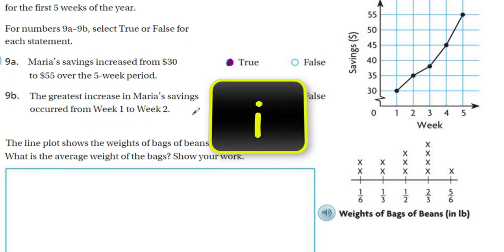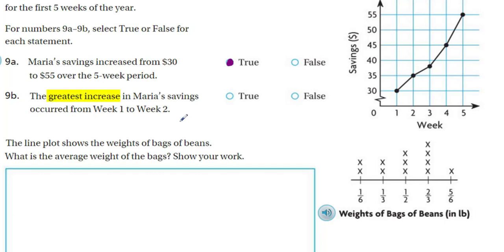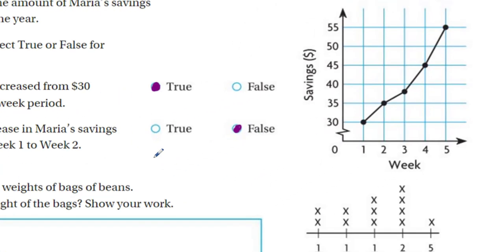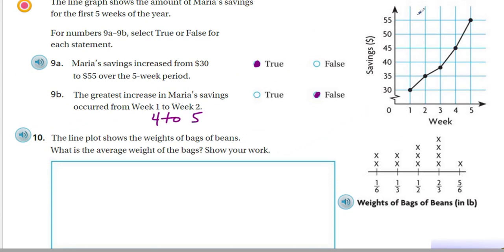The greatest increase in Maria's savings occurred from week one to week two. Let's see if that's true. From week one to week two we see a five-dollar increase — she was at 30, by week two she was up to 35. Looking at my graph, I can see there's a steeper incline as we go up. From 35 it didn't even get to 40, so that's less than $5. Then there's a bigger jump — and from week four to week five: 45 to 55, that's a $10 increase. So no, the correct answer should have been week four to week five — that would have been the correct answer.